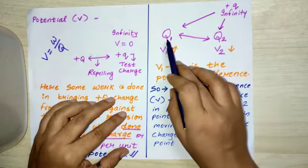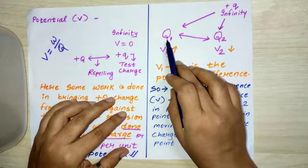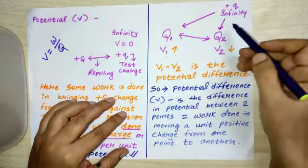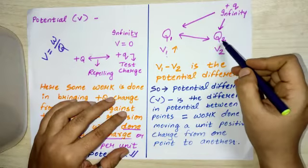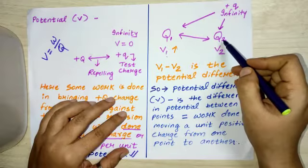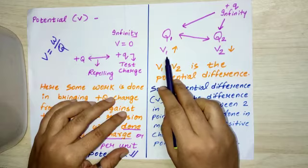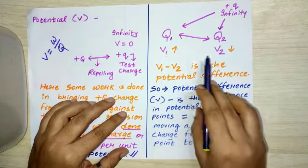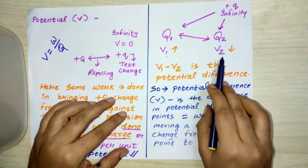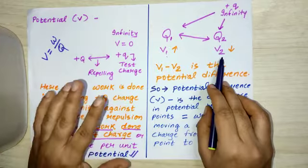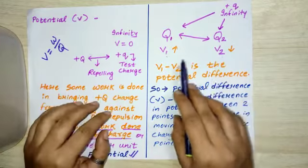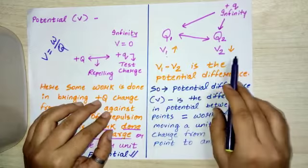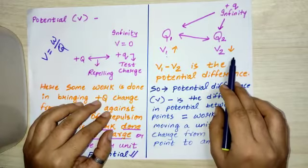Work done per unit charge in case of Q1 and work done per unit charge in case of Q2 will both be different. Suppose V1 here is greater and V2 here is smaller — anything can happen, but for now V1 is greater and V2 is smaller.